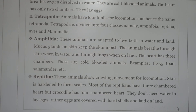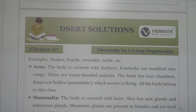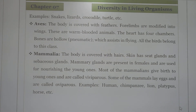Under Reptilia: the body is covered with scales. These animals show crawling movement for locomotion. The skin is hardened into scales. Most reptiles have a three-chambered heart, but the crocodile has a four-chambered heart. They do not need water to lay eggs. Examples include snakes, lizards, crocodiles, and turtles. Under Aves: the body is covered with feathers, the forelimbs are modified into wings, they are warm-blooded, the heart has four chambers, and the bones are hollow (pneumatic) which assists in flying. All birds belong to Aves.